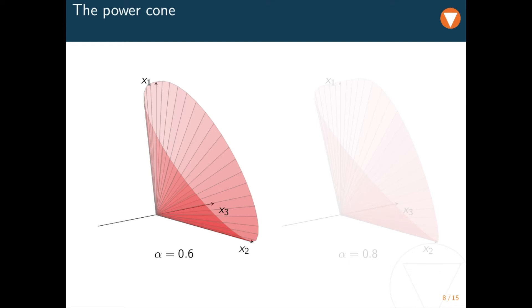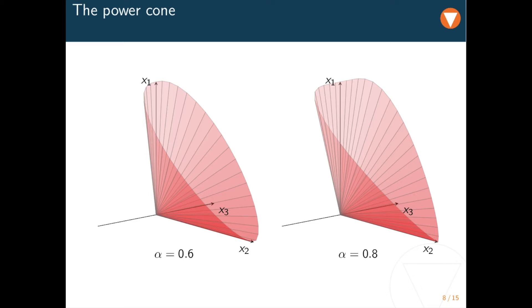Here instead we see power cones for two different values of α. Once again you can see the similarity to the rotated quadratic cone. The more we increase α away from one-half, the more the cone becomes skewed.